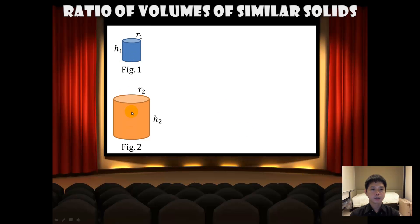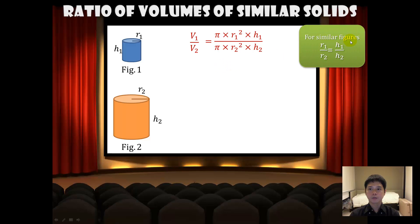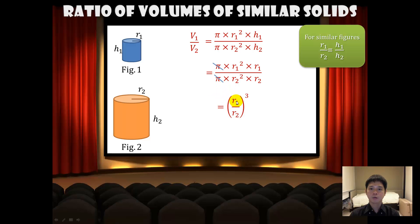Here we have two similar cylinders. The ratio of the volumes of these two cylinders can be given by V1 over V2, which is equal to π r1² h1 over π r2² h2. For any similar figures, the ratio of the corresponding lengths are equal, and hence we can replace h1 over h2 with r1 over r2. Cancelling out the common terms, we will have (r1 over r2) cubed.